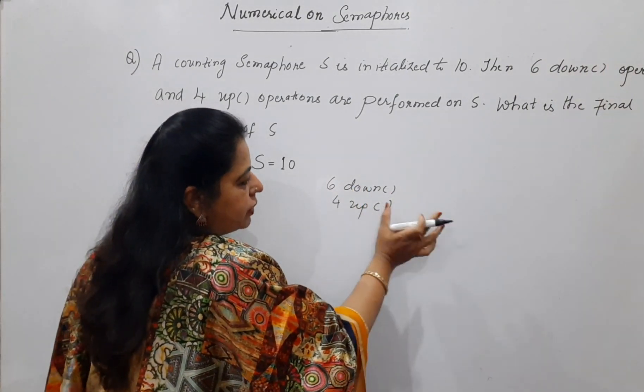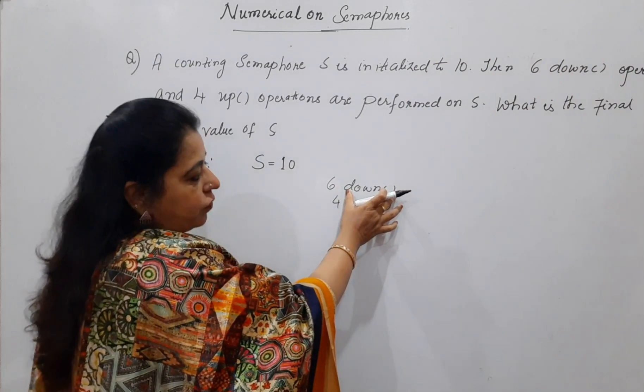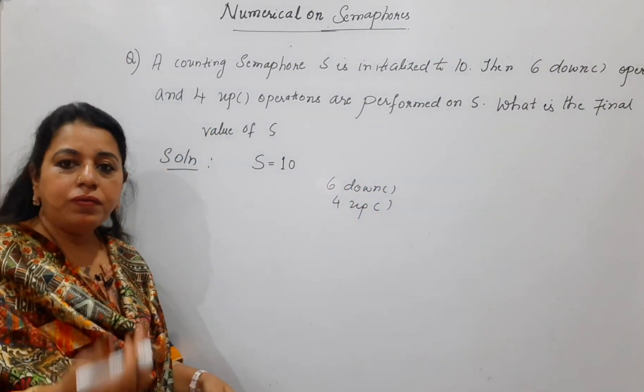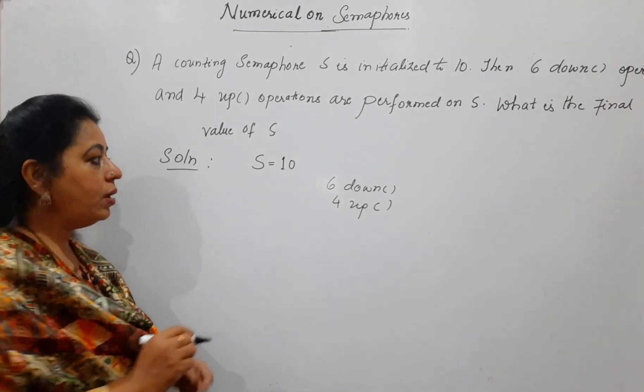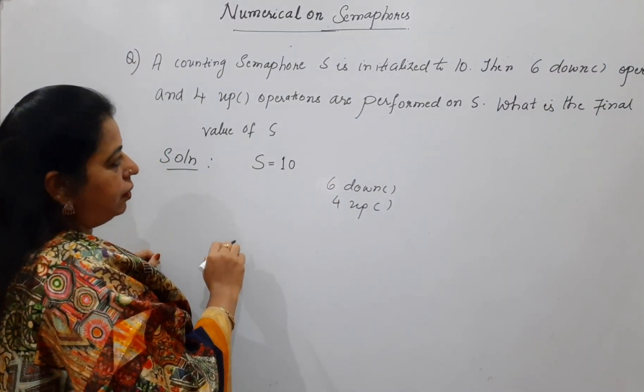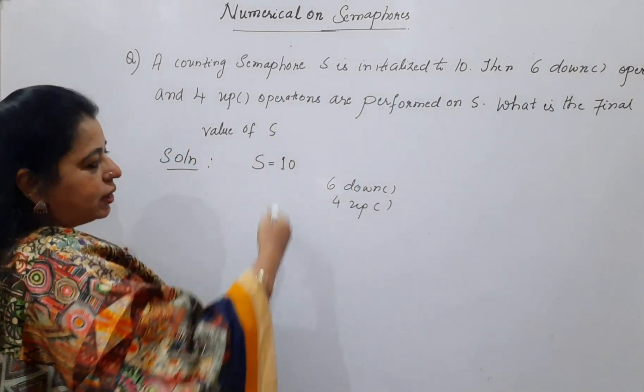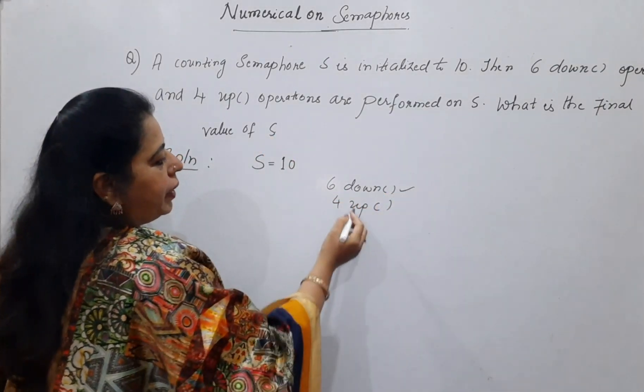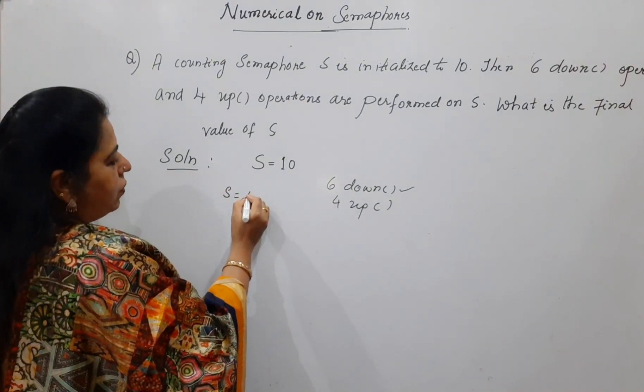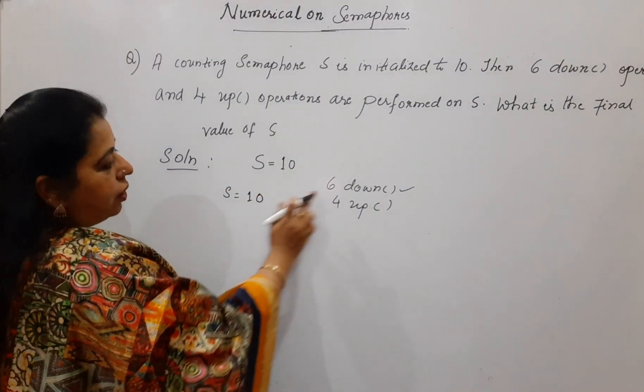In simpler words, down operation will decrement the value of semaphore by 1. Up operation will increment the value of the semaphore by 1. So, decrement operation and increment operation. Since they have given that first continuously 6 down will happen followed by continuously 4 up operations, your job is also easy now because initial value is 10.